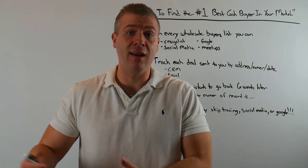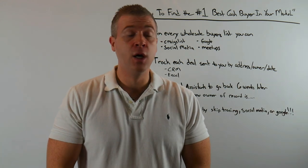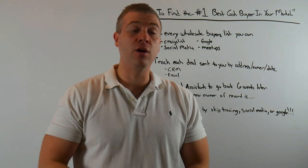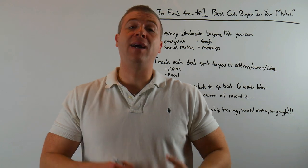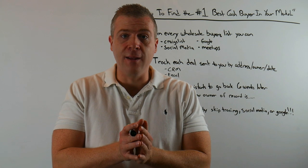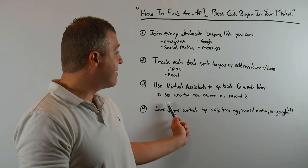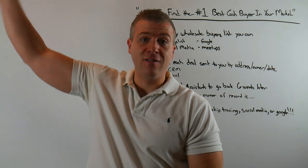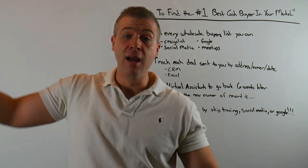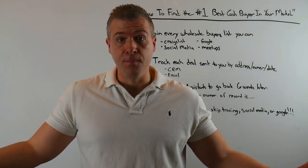Very quick, easy process. Track all the deals coming out from your competition. Get on their buyer's list to do so. Track the deals they send out by address, the owner's name, and the date. Six weeks later you go back — and why do we wait six weeks? This gives enough time for that new cash buyer to buy the property as well as for that information to update in the county records. Now that you have the new owner of record, that's the cash buyer that is the number one cash buyer off those big buyer's lists, because they're willing to pay more than 100,000 people.